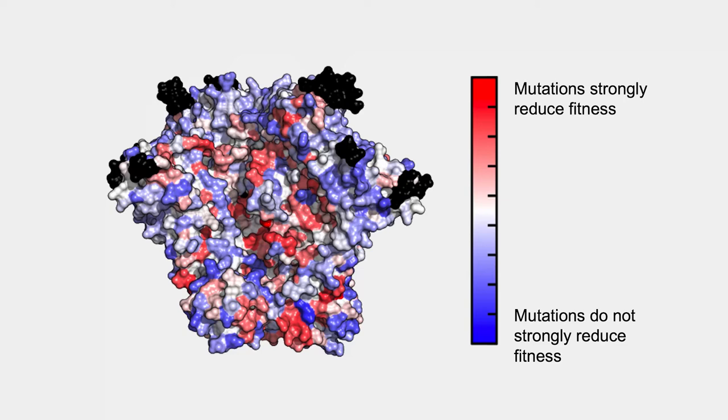shown here for the surface protein of HIV, where the red regions on this map indicate those positions which appear most vulnerable to immune pressure. That is,